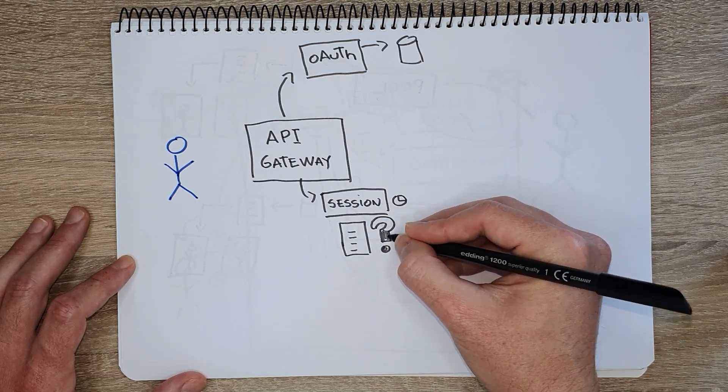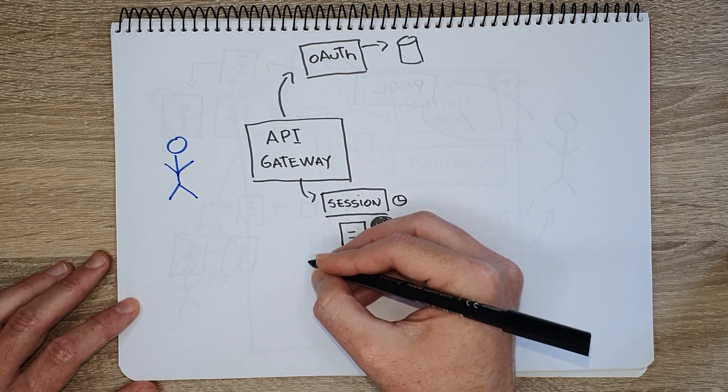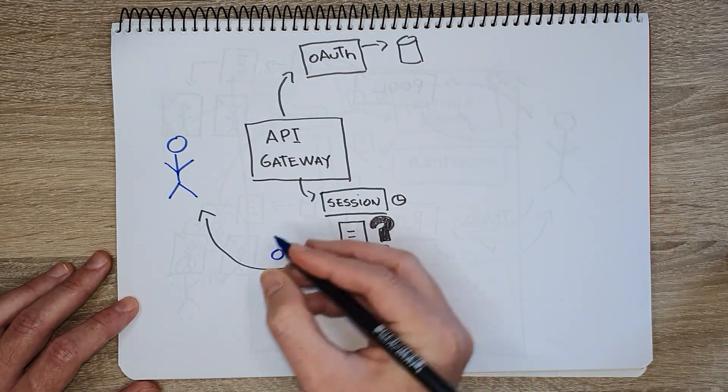Sharing the security context is now also more complex. Before, you just inject the security context inside your application and verify it at different layers. But now you did authentication in the API Gateway, so you need to pass that information to the rest of the services that will be doing verification of access, or authorization, of these requests in their systems. The most common way to do this is using tokens.